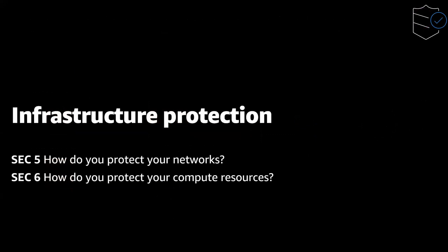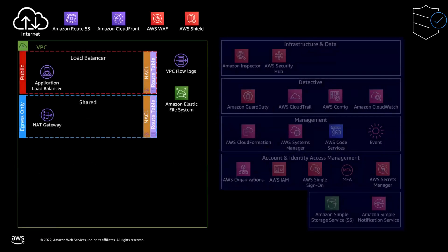Moving on to infrastructure protection. Defense in depth is a best practice in any type of environment. In the case of infrastructure protection, we look at how networking and compute are protected — enforcing boundary protection and monitoring points for ingress and egress, both essential to an effective information security plan. For example, hosting workloads with domain records in Amazon Route 53, with CloudFront enabled for content distribution, and using an AWS Web Application Firewall with managed rules adds a layer of defense at the edge of the workload.